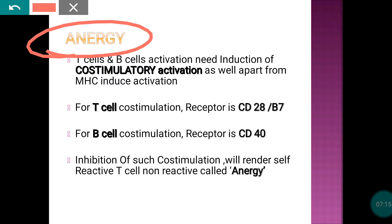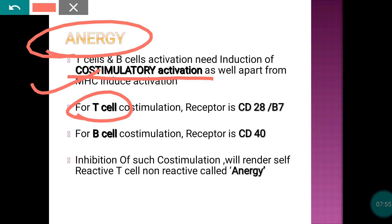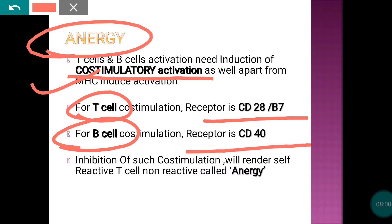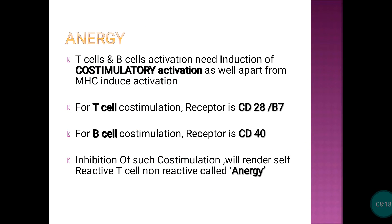Anergy works as follows: if self-reactive T and B lymphocytes escape from the central organ, the body blocks co-stimulatory activation. T cells and B cells need co-stimulatory signals to be fully activated. The co-stimulatory molecule for T cells is CD28 and for B cells it is CD40. By blocking these, T and B cells become non-reactive and non-functional — this is called anergy.